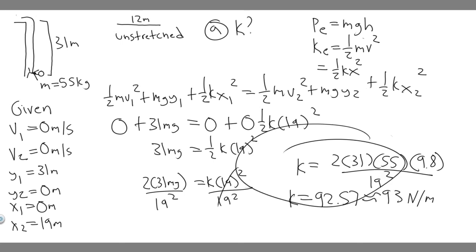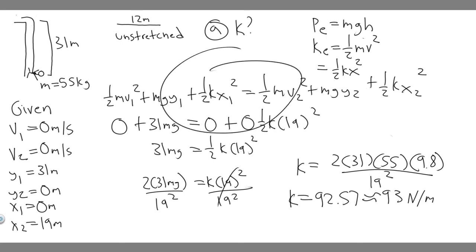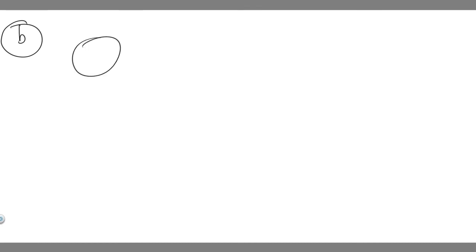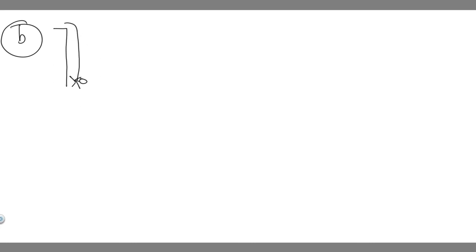Now let's do Part B: calculate the maximum acceleration she experiences. The maximum acceleration occurs when the cord is pulled all the way to the bottom, because that's when the tension in the cord is greatest and therefore when the acceleration will be greatest.